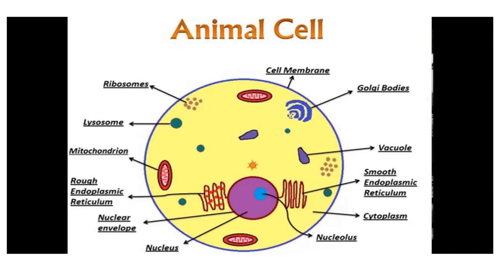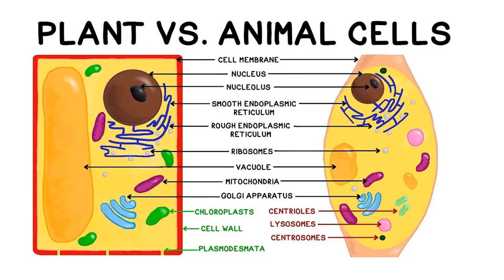Now we are going to see the difference between plant and animal cells. Both have a cell membrane, nucleus and nucleolus. Smooth and rough endoplasmic reticulum are present in both. The name rough is given because ribosomes are attached to its surface making it rough, while smooth ER does not have them. Mitochondria are present in both plants and animals as the powerhouse of the cell, providing energy in the form of ATP. Golgi apparatus are also present in both.